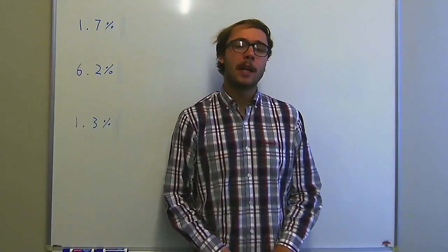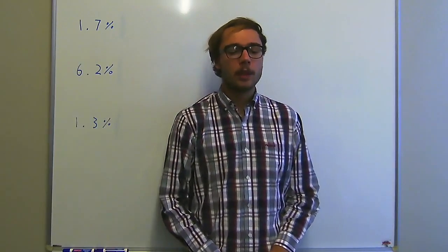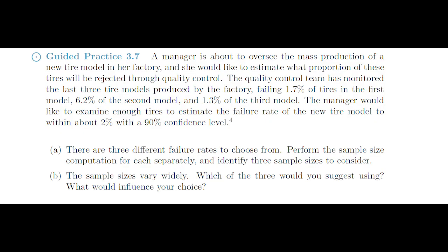In this video we'll be discussing guided practice 3.7. The question says a manager is about to oversee the mass production of a new tire model in her factory and she would like to estimate what proportion of these tires will be rejected through quality control. The quality control team has monitored the last three tire models produced by the factory, failing 1.7% of tires in the first model, 6.2% of the second model and 1.3% of the third model. The manager would like to examine enough tires to estimate the failure rate of the new tire model to within about 2% with a 90% confidence level.